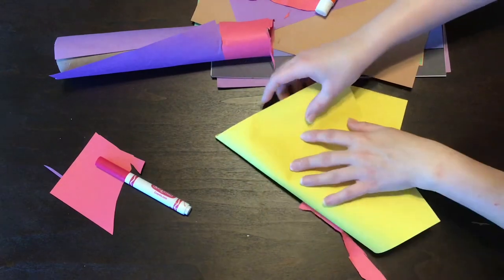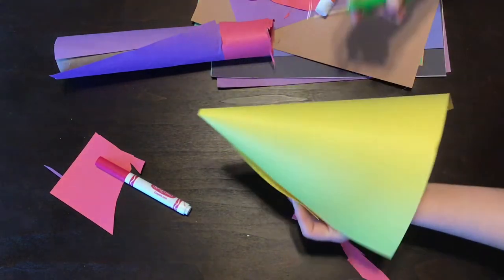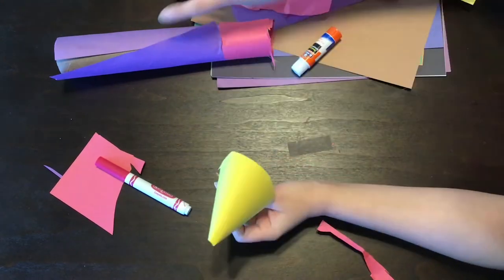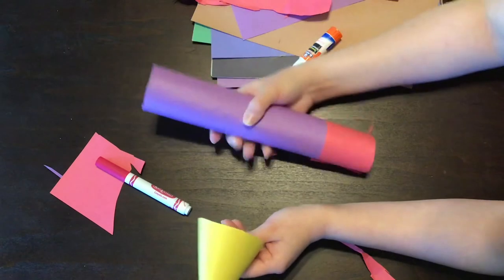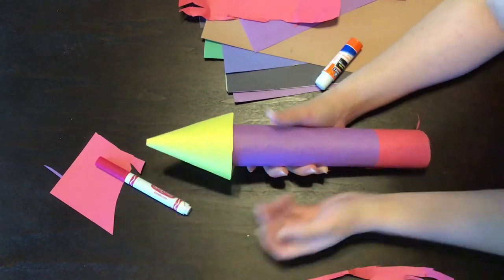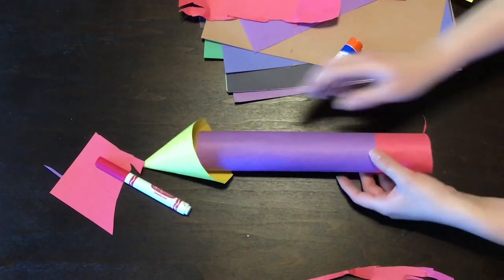And now I'm gonna cut it here so that I have a smaller version of this. Now I have the top of my rocket ship. There we go. Perfect.